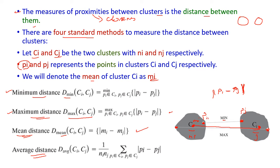The mean distance takes the mean value of the first cluster and the mean value of the second cluster; the difference between these two is the mean distance. The average distance uses all points from one cluster and all points from the other cluster, computed as (1 / Ni × Nj) × Σ(Pi ∈ Ci, Pj ∈ Cj) |Pi − Pj|. This is the average distance between two clusters.